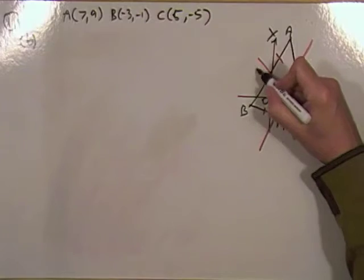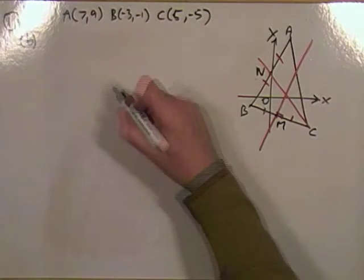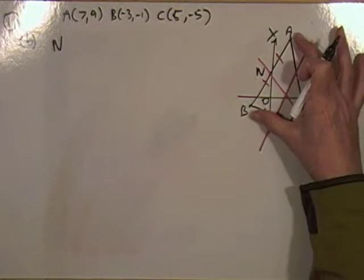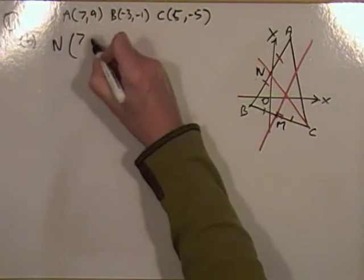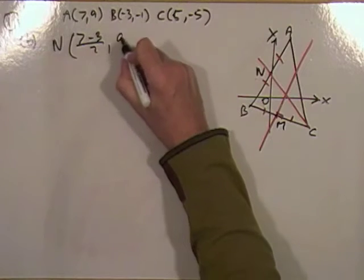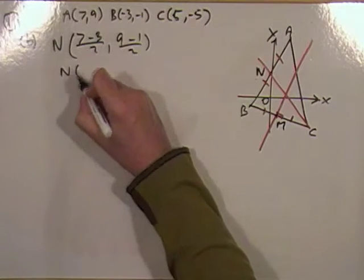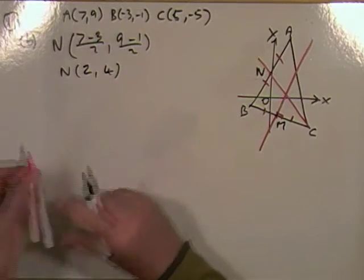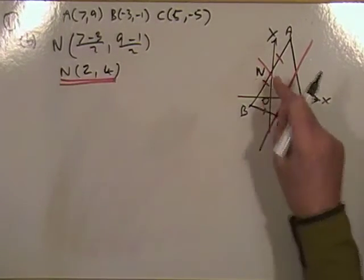It cuts the middle, so I need the midpoint. Same as before, call it N. N is going to be the midpoint of AB. Average of the x coordinates: 7 and negative 3 upon 2. Average of the y coordinates: 9 and negative 1 upon 2. So N is going to be the point 2, 4.